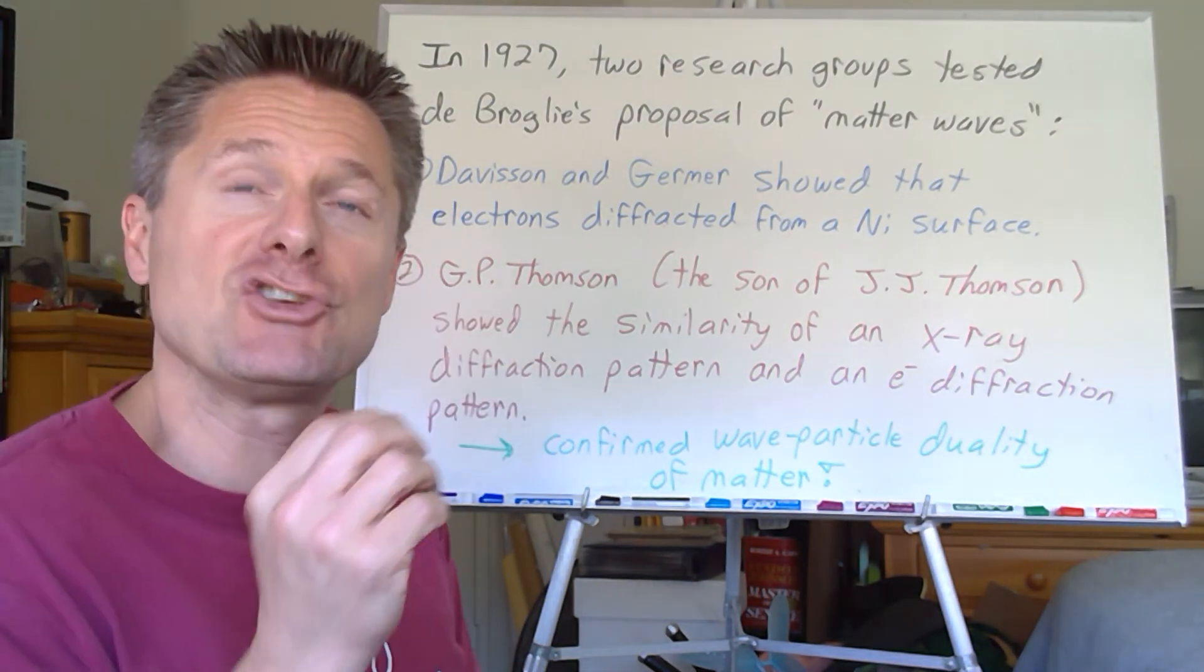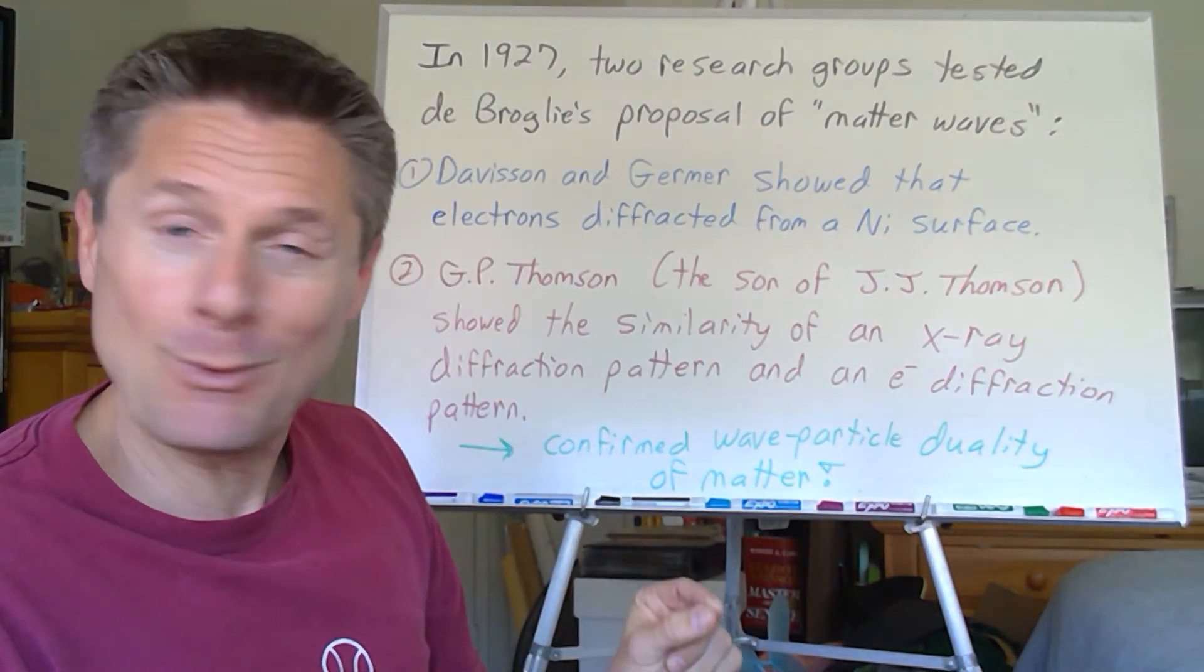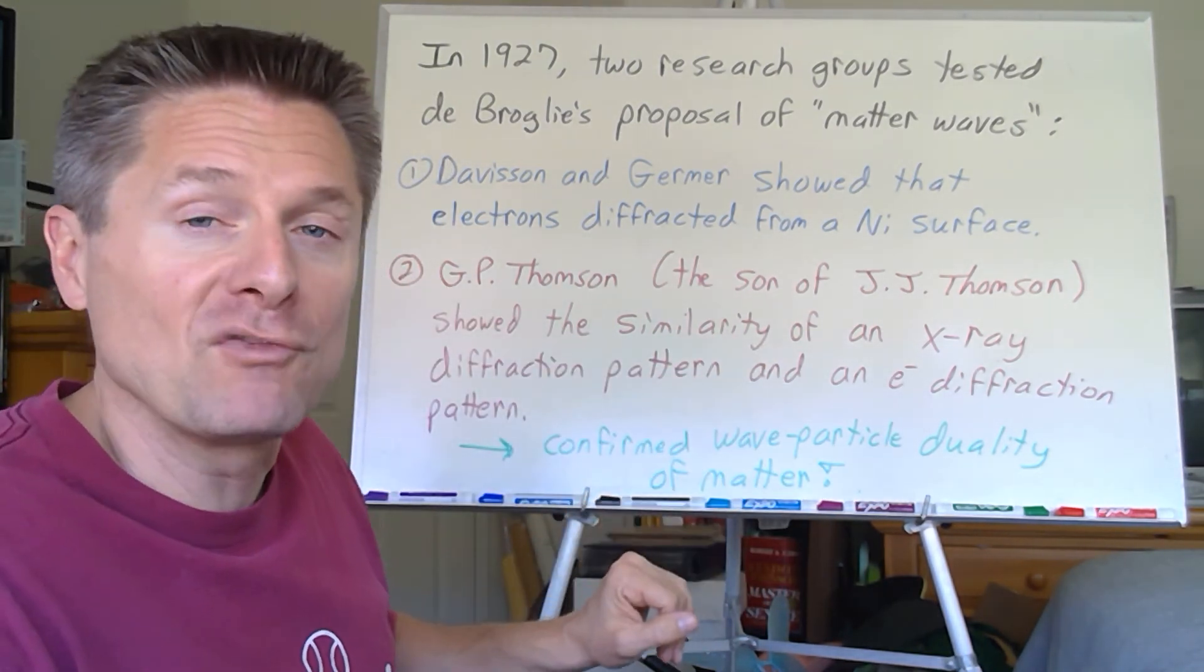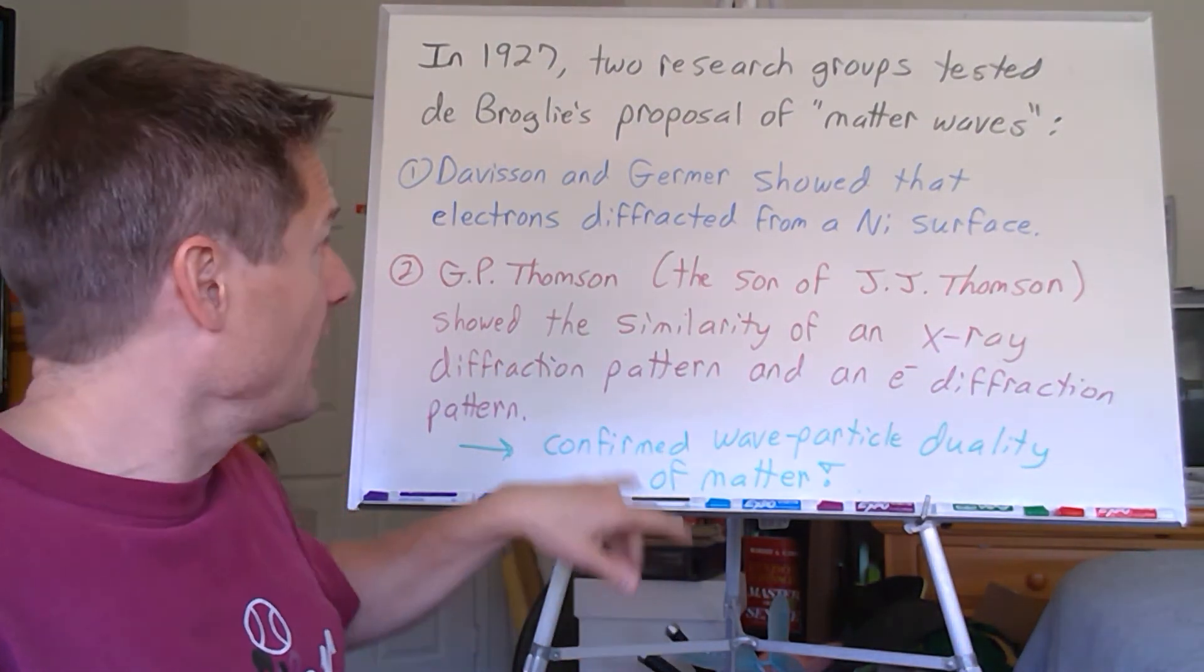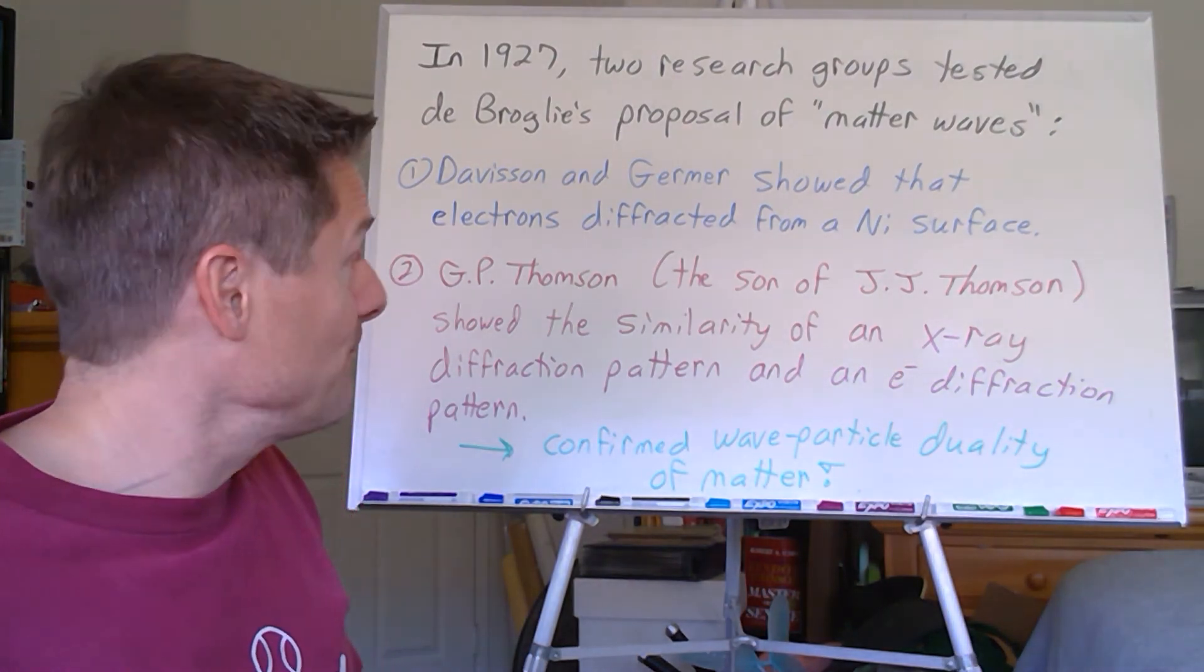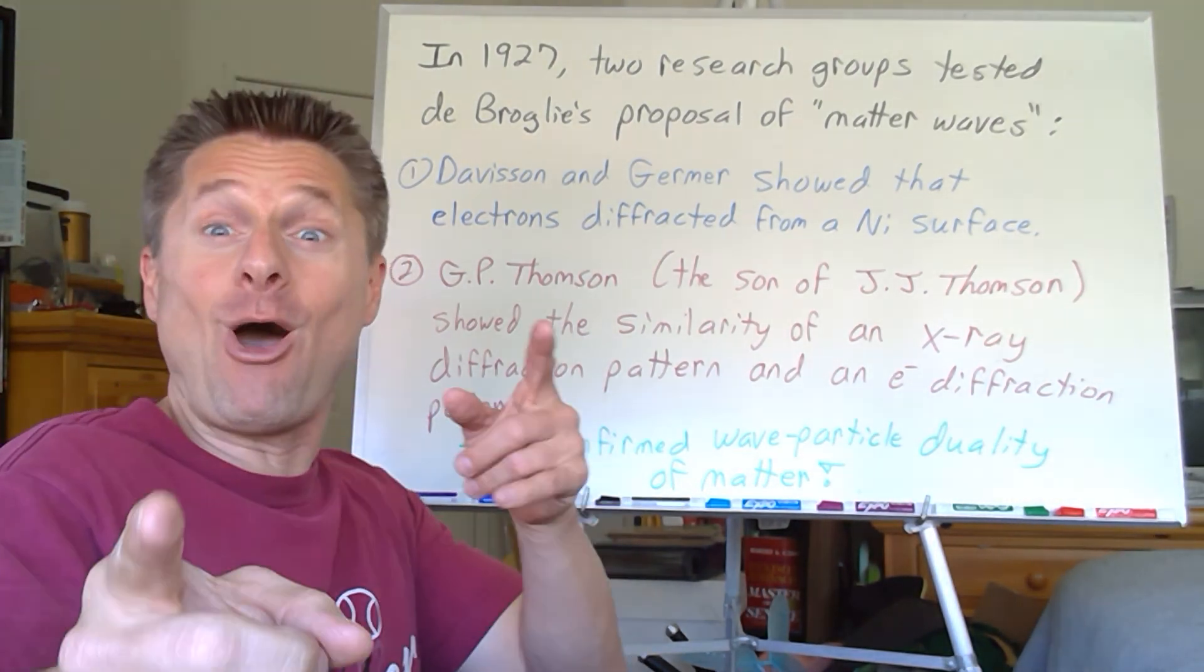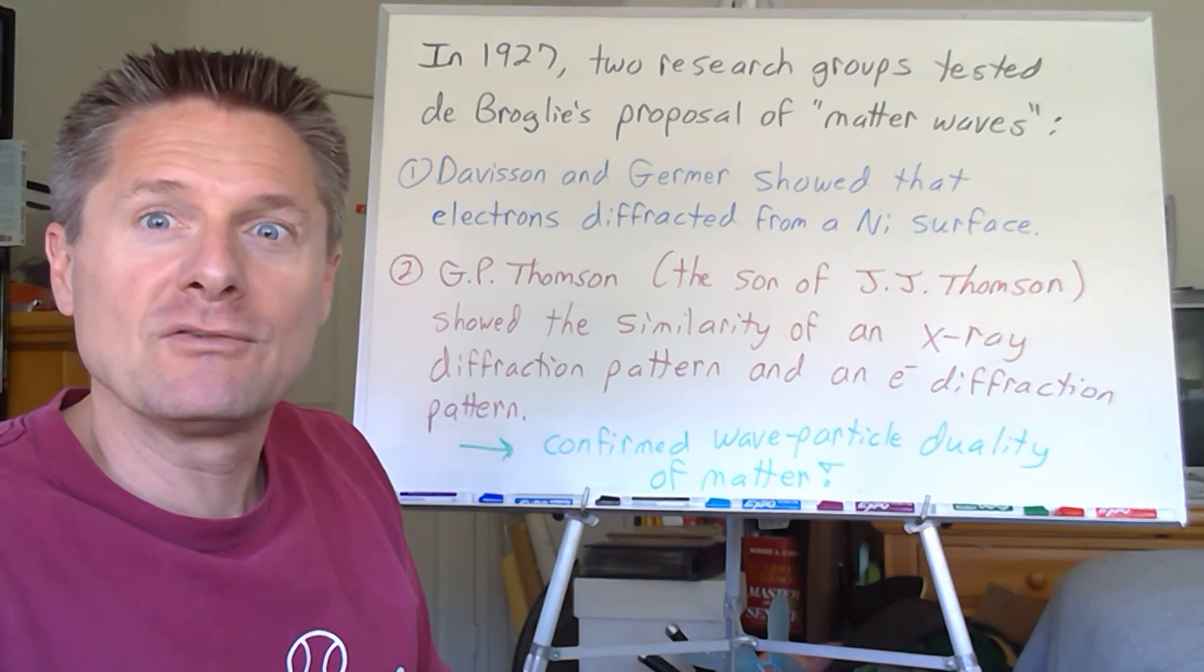So this shows one of the flaws in Bohr's model of the atom where he treated electrons as point particles moving in circles. No, that can't be right because the electrons actually move like waves. How do we incorporate that into improving the Bohr model? It's going to take some really smart people to do that. Thompson got the Nobel Prize, J.J. Thompson with his work on the electron, but his son also got a Nobel Prize. Both the father and the son got Nobel Prizes. The father got a Nobel Prize for showing that electrons were particles, and his son got a Nobel Prize for showing electrons were waves. Great stuff. Let's look at Heisenberg and his infamous uncertainty principle.